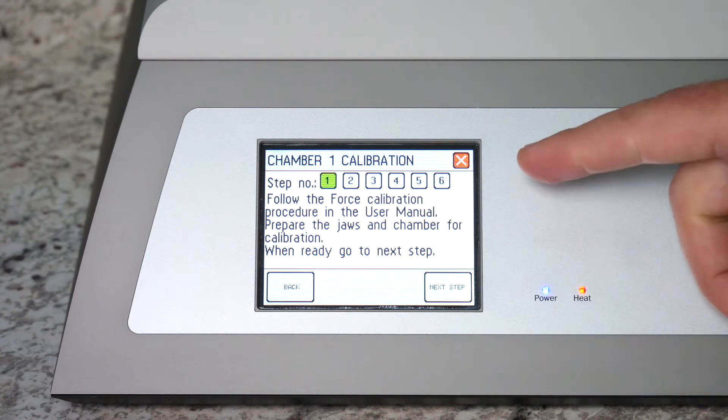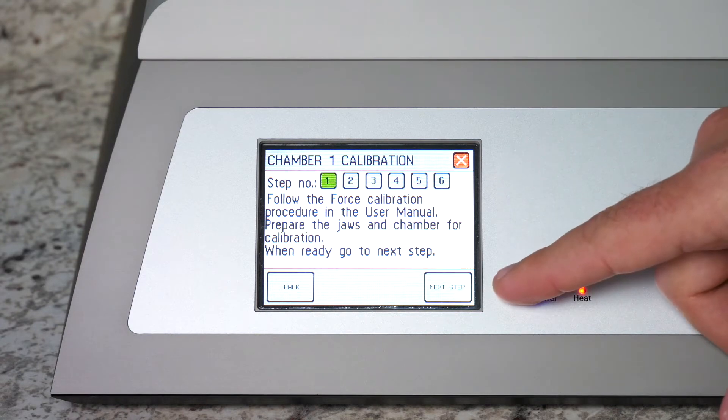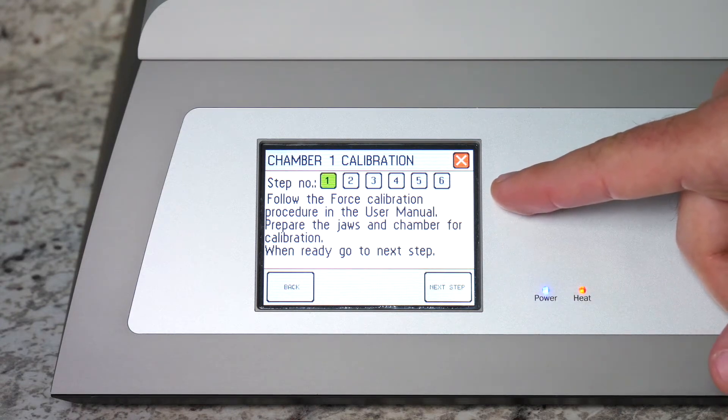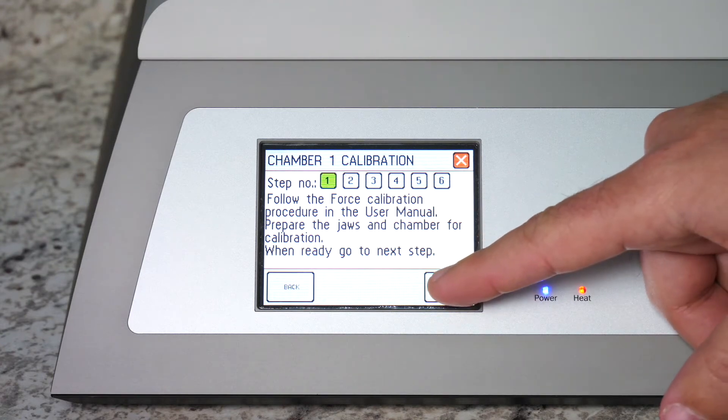This will take you to the calibration menu which is a six step menu but you really only do a couple things. Step one tells you to follow the procedure in the manual but instructions are also provided in the menu here. Hit next step.